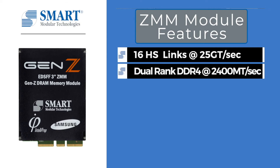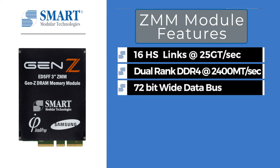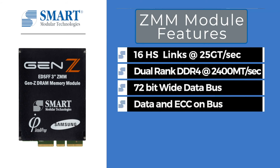ZMM memory modules are made of dual-rank DDR4 memory running at a data rate of 2400 mega transfers per second. These memory ranks provide sufficient bandwidth to saturate all 16 lanes on HostSight. Each memory rank is a 72-bit wide data bus comprising both data and ECC.